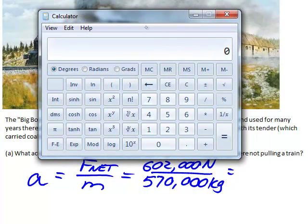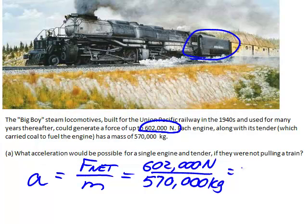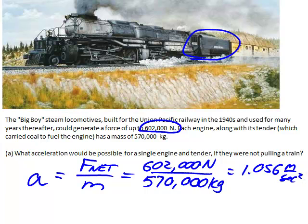We pull up the calculator. 602,000 divided by 570,000 gives us 1.056 meters per second squared, which since we have two significant digits only on the mass, we'll call it 1.1 meters per second squared. That's the acceleration of this engine pulling its tender but nothing else.